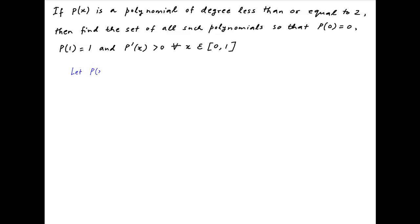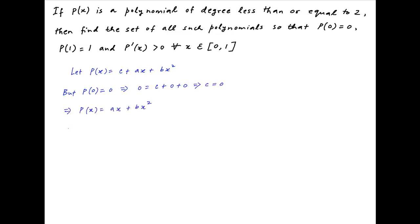Since p(x) is a polynomial of degree less than or equal to 2, let's assume that p(x) is equal to c plus ax plus bx squared. We are given that the value of p(x) at x equals 0 is equal to 0. Therefore c is equal to 0, and p(x) simplifies to ax plus bx squared.